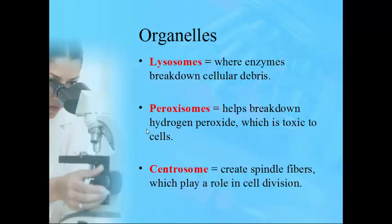Lysosomes — the prefix 'lys' means to break open, so lysosomes break open and destroy basically garbage that the cell wants to get rid of, acting like a stomach to digest and break things down. Peroxisomes help break down hydrogen peroxide, a common byproduct of chemical reactions that can be very dangerous and toxic to cells. Centrosomes create spindle fibers, which are very important in the role of cell division.